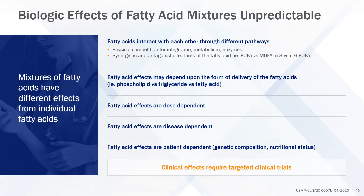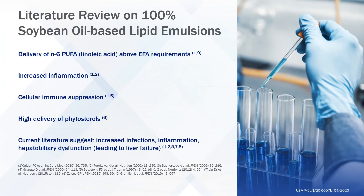When we search the literature regarding effects of 100% soybean oil emulsions, we note that they have been associated with excess delivery of linoleic acid and omega-6 PUFA — amounts much greater than required to meet essential fatty acid requirements — excess inflammation, cellular immune suppression, high delivery of phytosterols, which have been linked to parenteral nutrition-associated liver disease, increased infections, and hepatobiliary dysfunction.